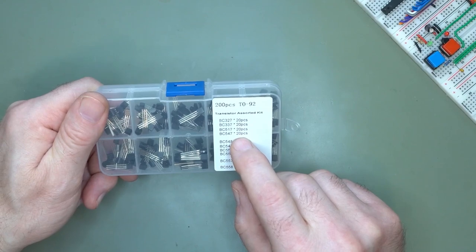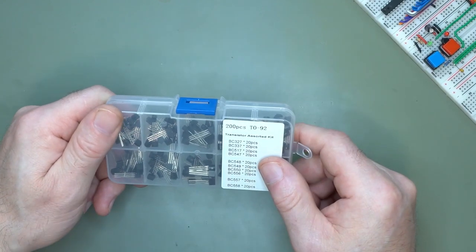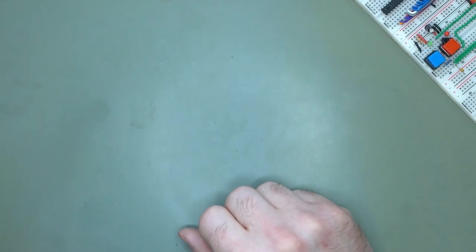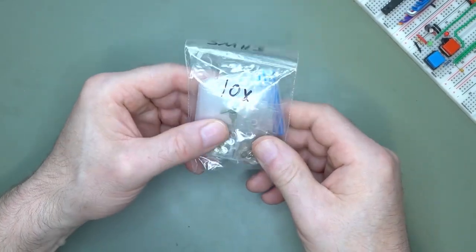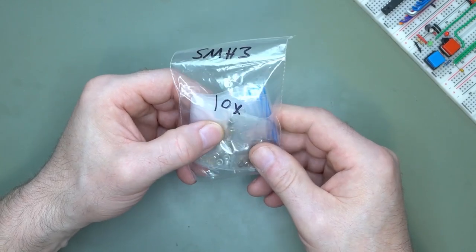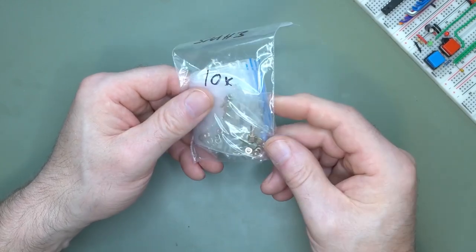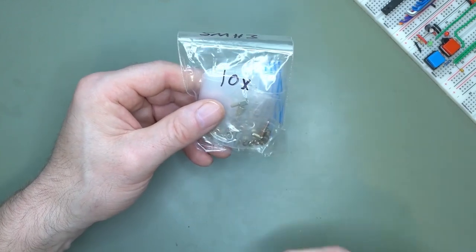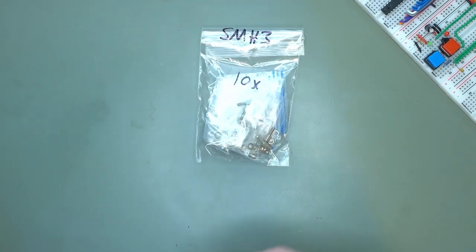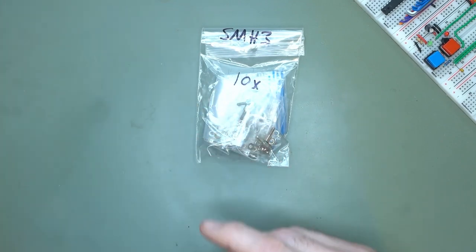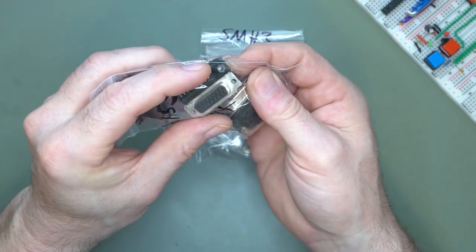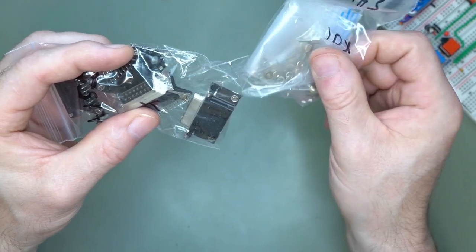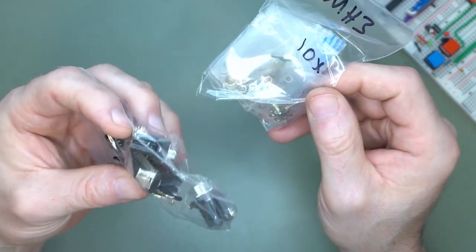These are little posts for the DB sub connectors because most of them don't come with screws, right? For example, this one doesn't have any, so I needed to buy those. Hopefully they'll be long enough.